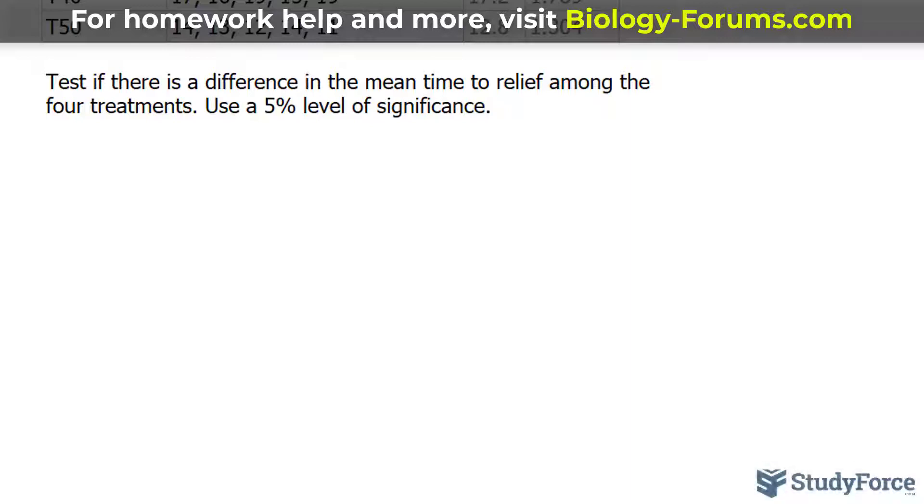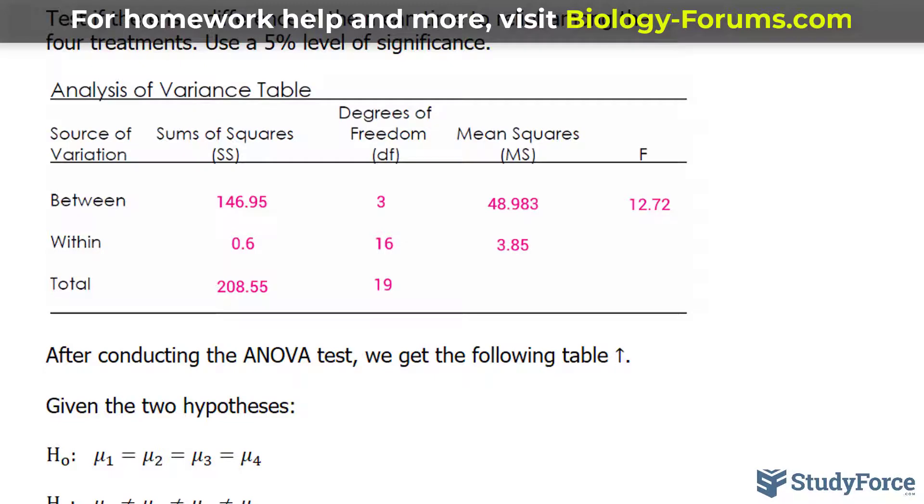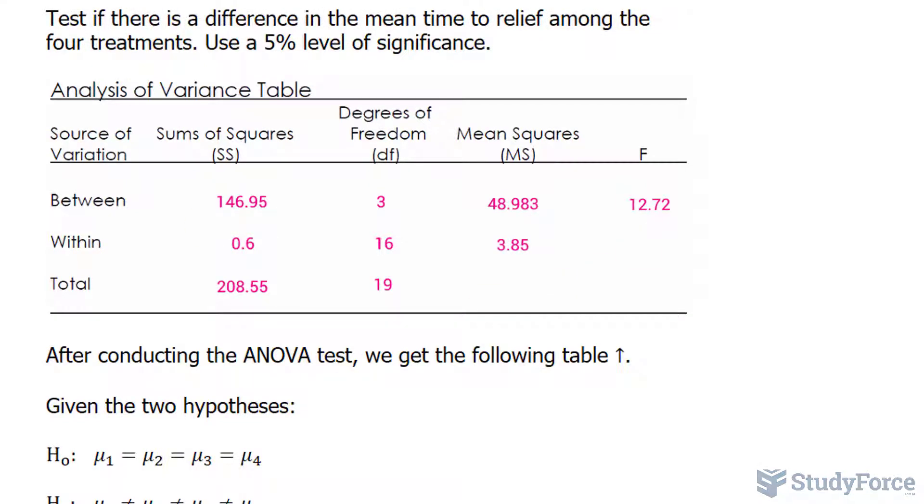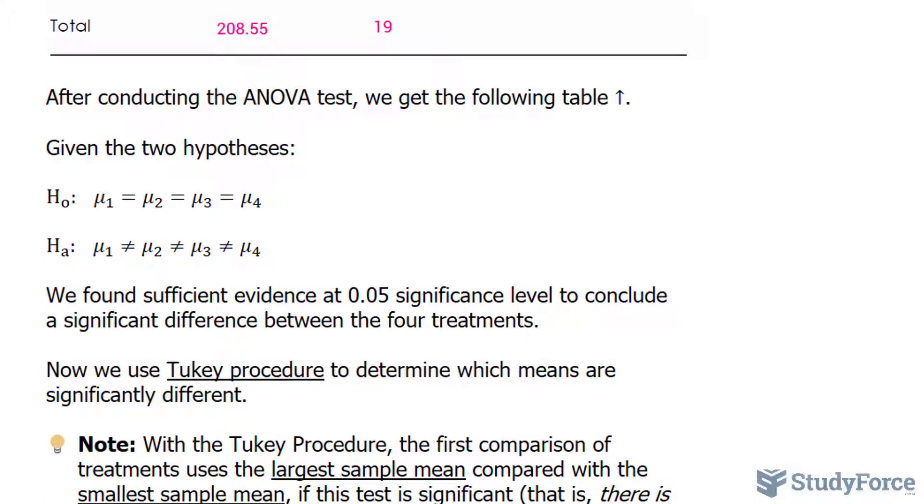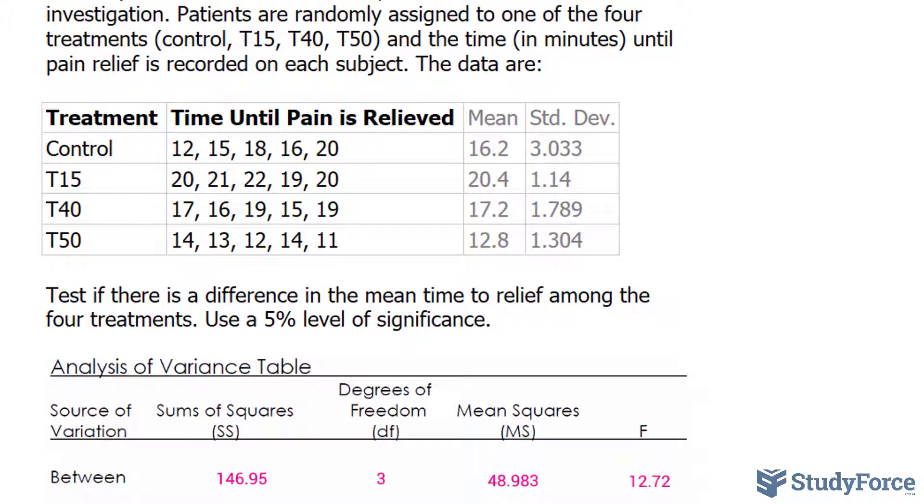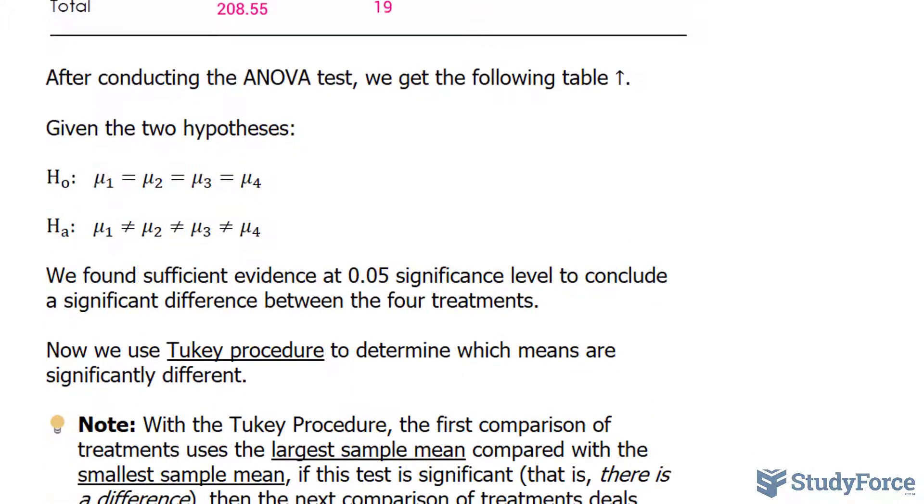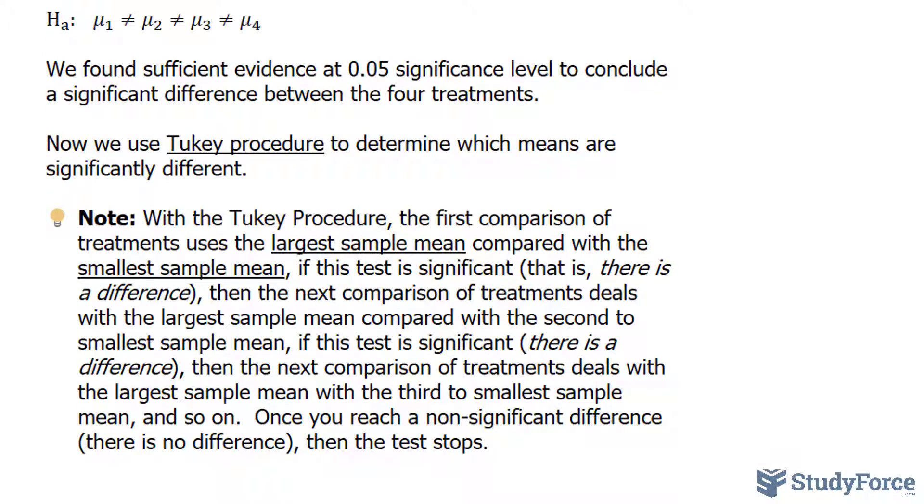I created an ANOVA table where I calculated all of these numbers that you see in pink, and I also created the null hypothesis, represented as H₀, and the alternative hypothesis. After doing the ANOVA test, I found significant evidence at 0.05 significance level to reject the null hypothesis in favor of the alternative. This means there is a difference amongst these four treatments, but we don't know exactly which one is significantly different. This is why we use the Tukey procedure, so we can tell which ones are significantly different.